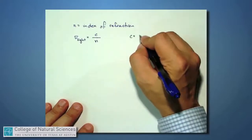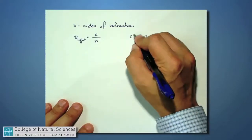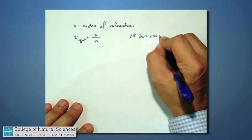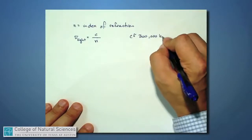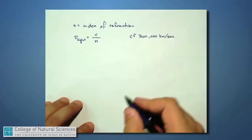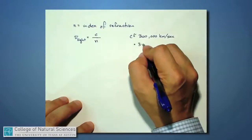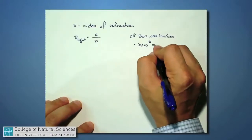c is an often very familiar number. It's about 300,000 kilometers per second, or 3 times 10 to the 8 meters per second.